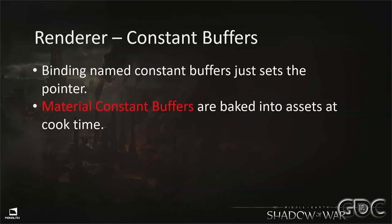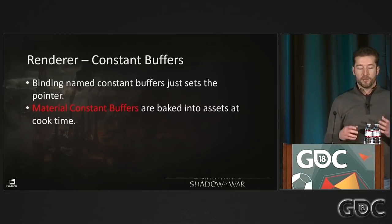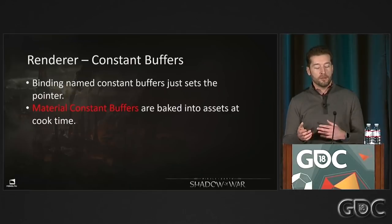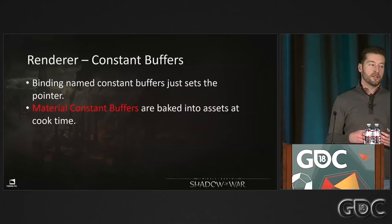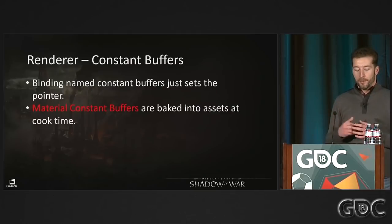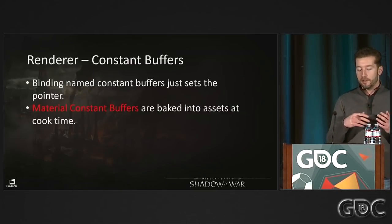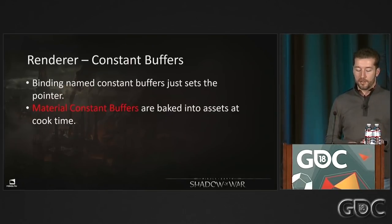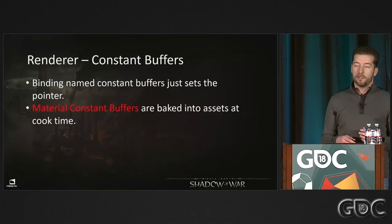When a buffer is dirty, we give the GPU a copy and make a separate copy for the CPU to keep working on. The GPU copy is marked with a frame code so we can't touch that memory until the GPU clears it, then we recycle it. Binding constant buffers on consoles is now just a pointer set — no special memory allocation, no memcopy, no upload. For material constant buffers set by artists, we generate them as fully platform-specific at cook time, so at runtime they're also just a pointer set and we never need to know their contents.